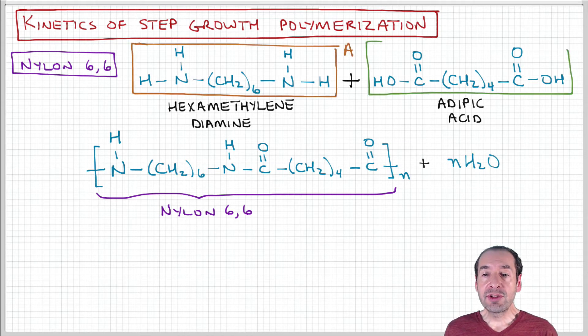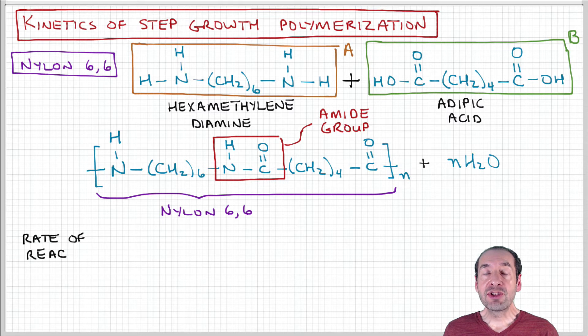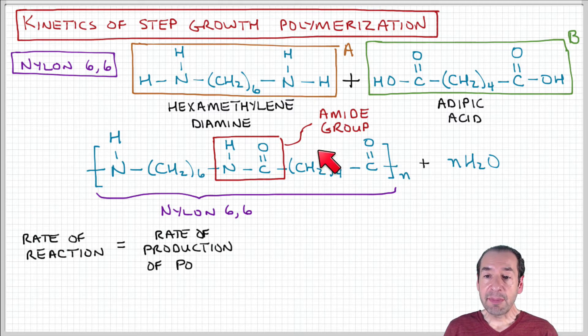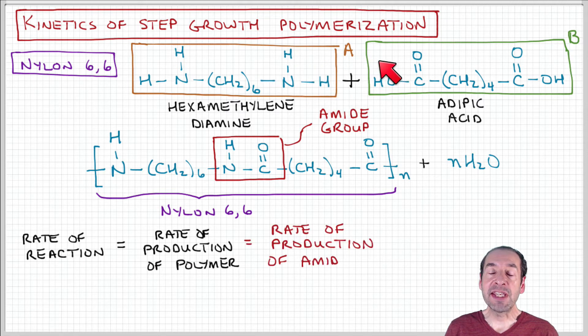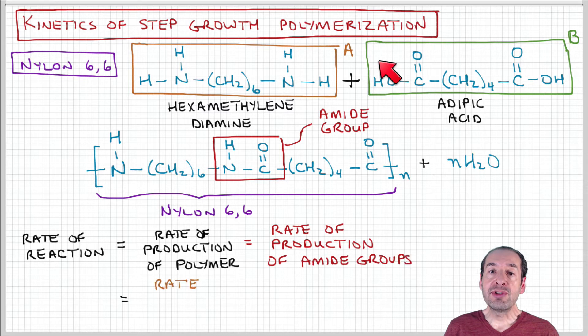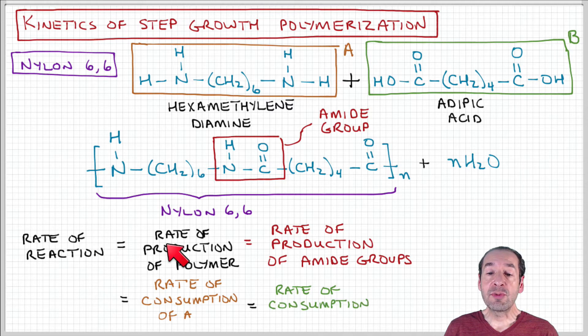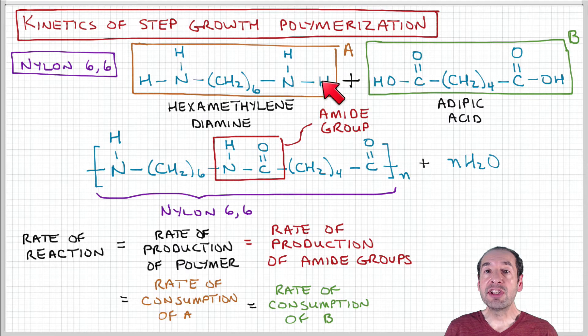If we want to express a rate of reaction associated with this process, our components are A and B, the two different monomers, and those go to produce the polymer. The rate of reaction can be expressed as a rate of production of polymer or rate of consumption of these monomer units. All of those will be related to the rate of the reaction process.